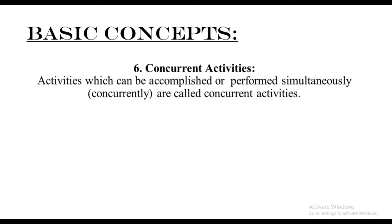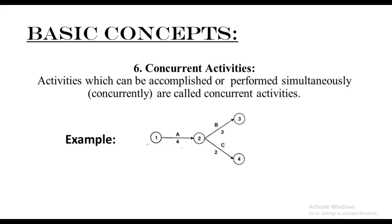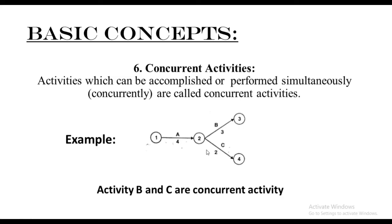The next concept is concurrent activity. Activities which can be accomplished or performed simultaneously are known as concurrent activities. For example, in this diagram we have activity A with starting point one and end point two. After the completion of activity A, there are two activities simultaneously being performed — activity B and activity C. This is a concurrent activity. Activity B and C are concurrent, meaning from one single activity two or more activities can be performed simultaneously.